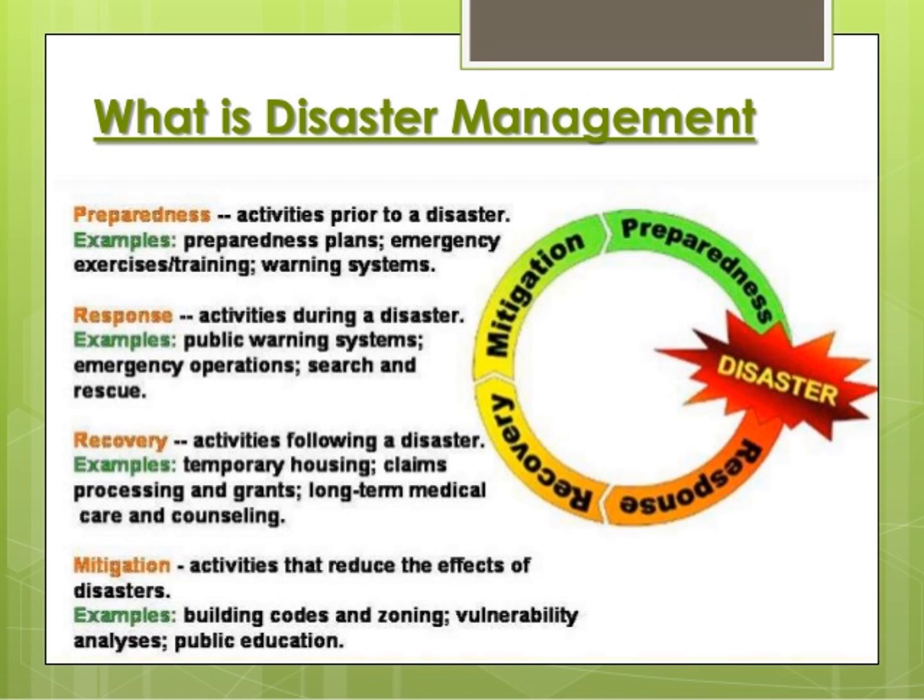Authorities should warn people in the area beforehand. Mitigation involves activities that reduce the effect of a disaster, such as building codes and preventing unplanned urbanization and industrialization — this can prevent many man-made and natural disasters. In case of cyclones or floods that can be predicted, we have to plan accordingly and shift people from affected areas to safer locations.